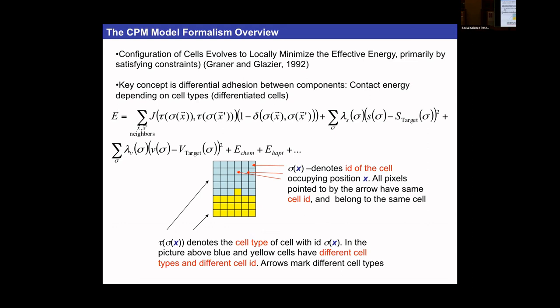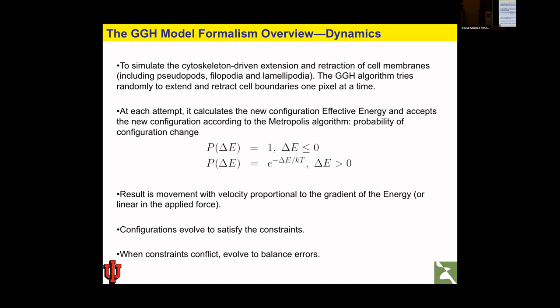The volume constraint uses lambda, which determines how stiff your cell is, and a target volume determining what the actual cell volume should be. The dynamics is a Monte Carlo minimization of energy: at every lattice perturbation attempt we compute the change in energy.